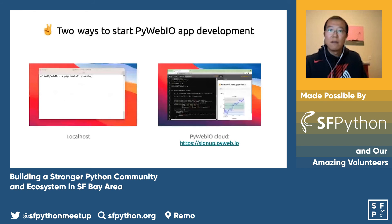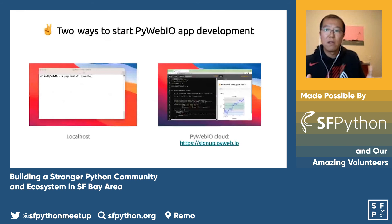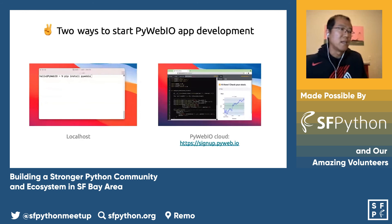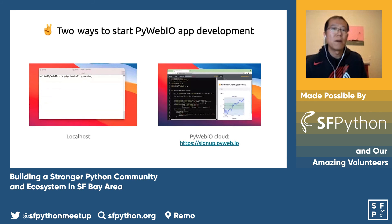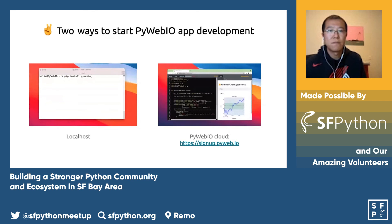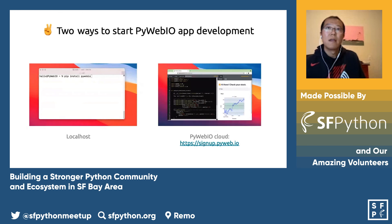There are two ways you can start PyWebIO application development. Number one, install it, use your favorite IDE to write a script, go back to your terminal, and run 'python your_app.py' — your application will run on a port on your localhost. Another way: if you don't want to set up your local environment, join PyWeb Cloud. Ping me, I'll give you an invitation code, start writing code on the left side, push a button to show your preview, push another button to make it online. It's that simple.